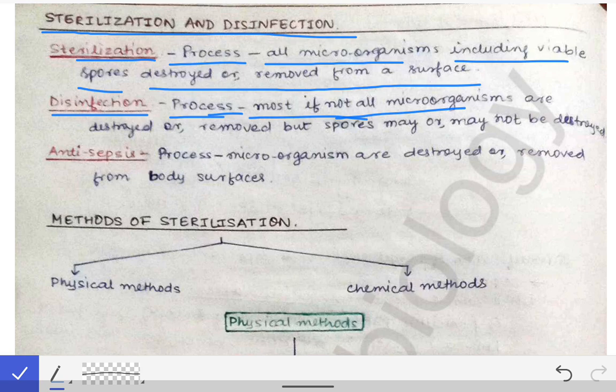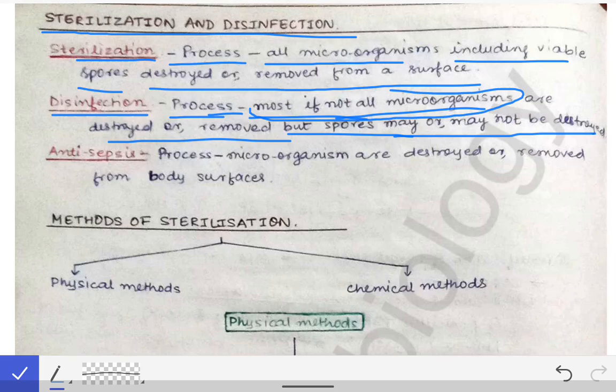In disinfection, spores may or may not be destroyed. The two most important parts of the definition of disinfection are: first, it is 'most if not all microorganisms,' and second, 'spores may or may not be destroyed.' So it is not compulsory in disinfection that spores will be removed.